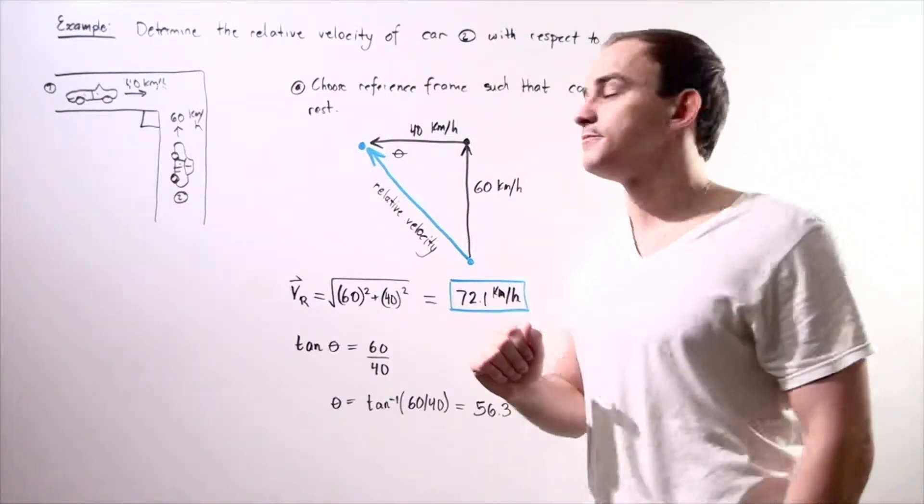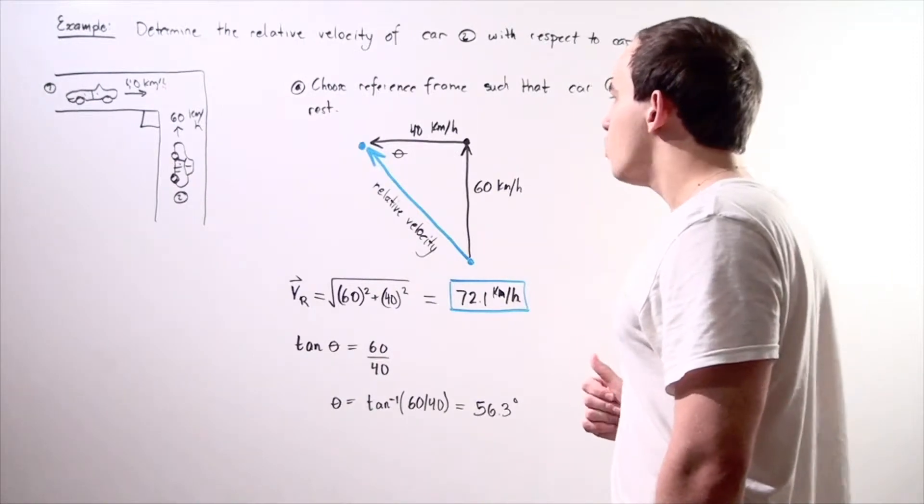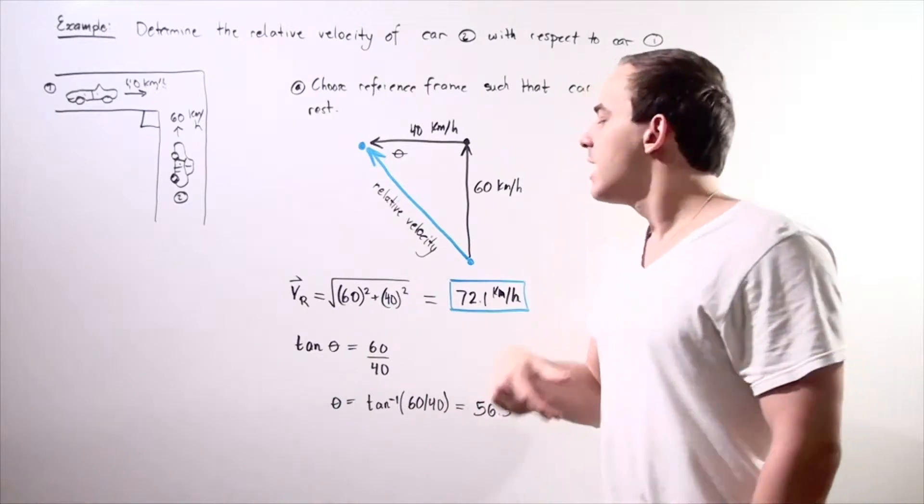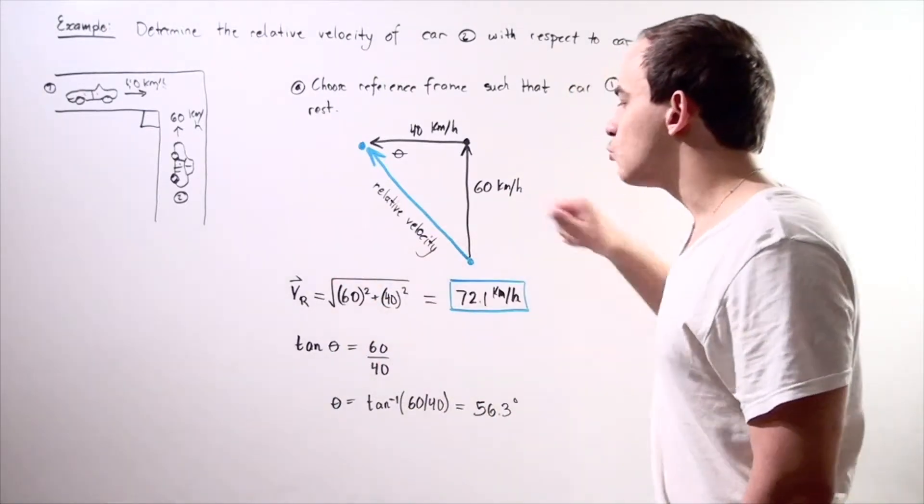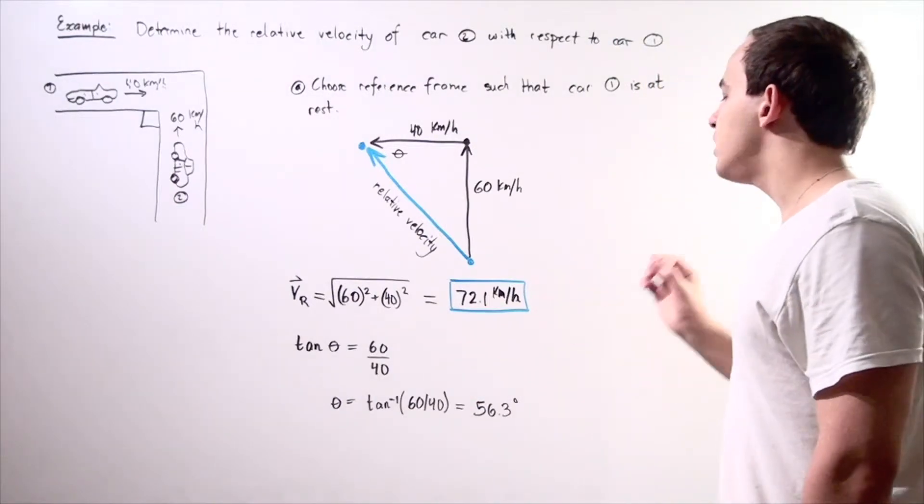So we have to use our Pythagorean theorem. We know the base and the height so that means we have 60 squared plus 40 squared, add that up, take the radical and we get approximately 72.1 kilometers an hour is the magnitude of the relative velocity vector.